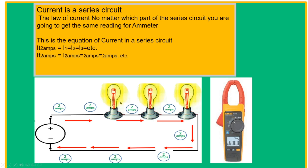Current in a series circuit: the law of current states that no matter which part of the series circuit you measure, you get the same ammeter reading. This is the equation of current in a series circuit. If our supply current is 2 amps, it will flow all the way through the circuit and return to the supply as 2 amps.